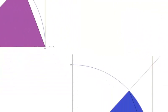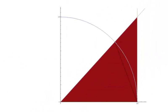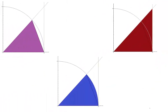We make these strange choices to obtain three shapes with increasing area: a purple triangle, a blue sector, and a red triangle. The area of the purple triangle is less than the area of the sector, which is less than the area of the red triangle. The three areas are to be used with the squeeze theorem.